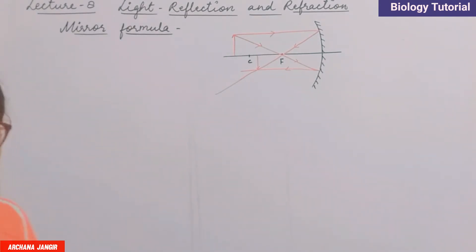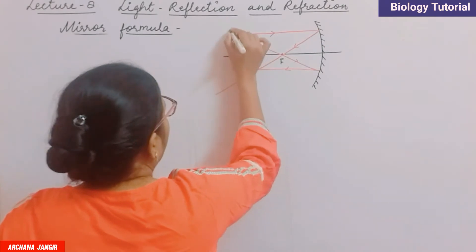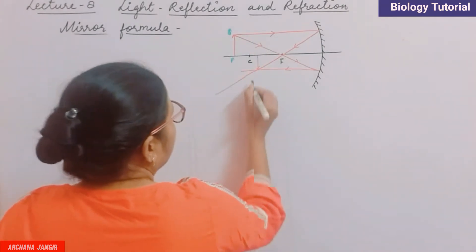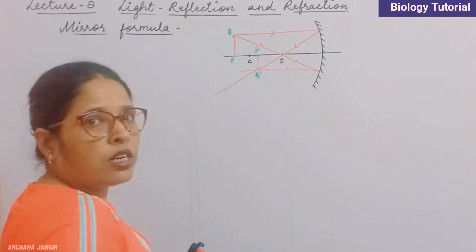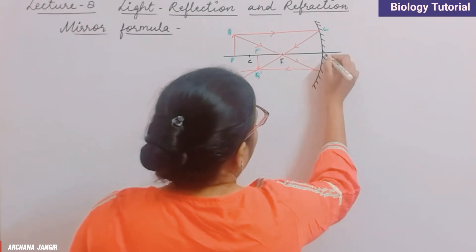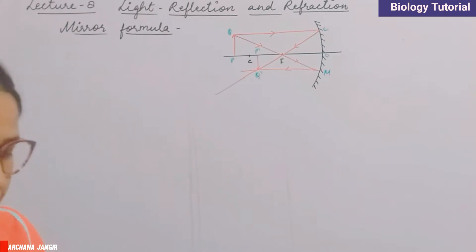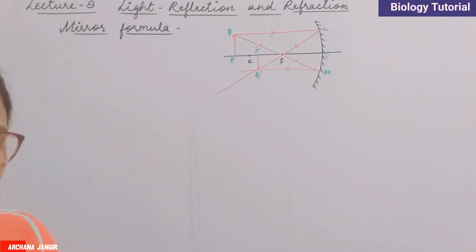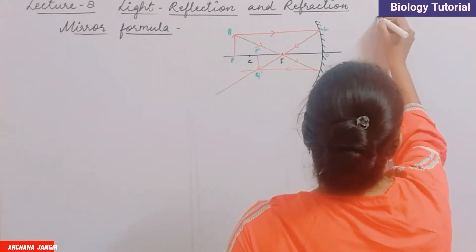Next, we have to label all these things. The object is PQ, and P'Q' is the image. Here is L, this is M, and this is O. We label these points on the diagram. This is our complete diagram.